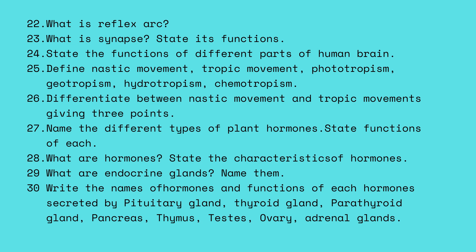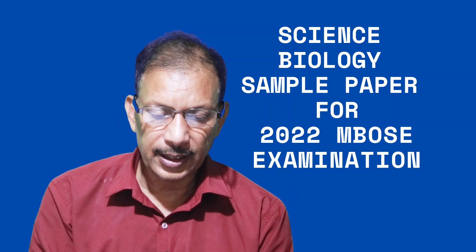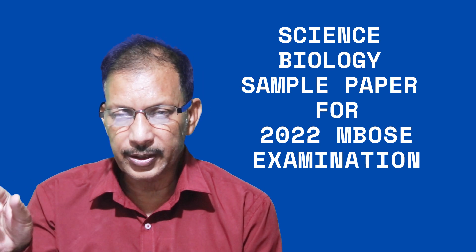What are hormones? State the characteristics of hormones. What are endocrine glands? Name them. Write the names of the hormone and function of each endocrine gland: pituitary gland, thyroid gland, pancreas, thymus, testis, ovary, and adrenal gland. Make a table listing endocrine glands, hormones secreted by them, and the functions of these hormones.